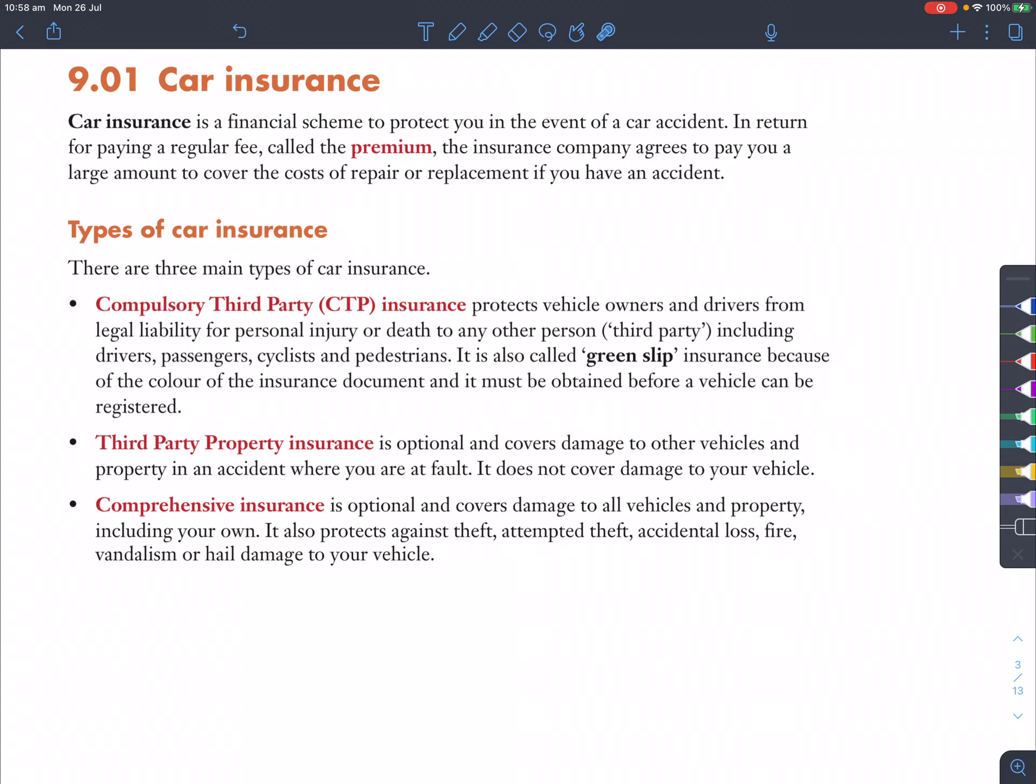Top car insurance companies I would say are like NRMA, AMI, and Budget Direct. So you'll be paying what you call a premium, it could be some amount per month or per fortnight or per quarter maybe. And that will help protect you in instances where someone crashes your car or you crash someone else's car.